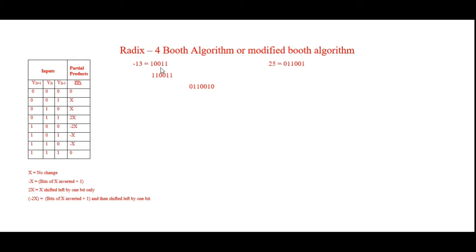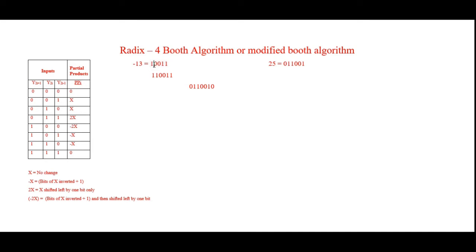First I have to make sure that the number of bits taken for both digits is even. I can see there are 5 bits in minus 13 and 6 bits in 25. So I have to extend the sign of the number that is not even. I extended one digit in minus 13 — now it has an even number of bits.